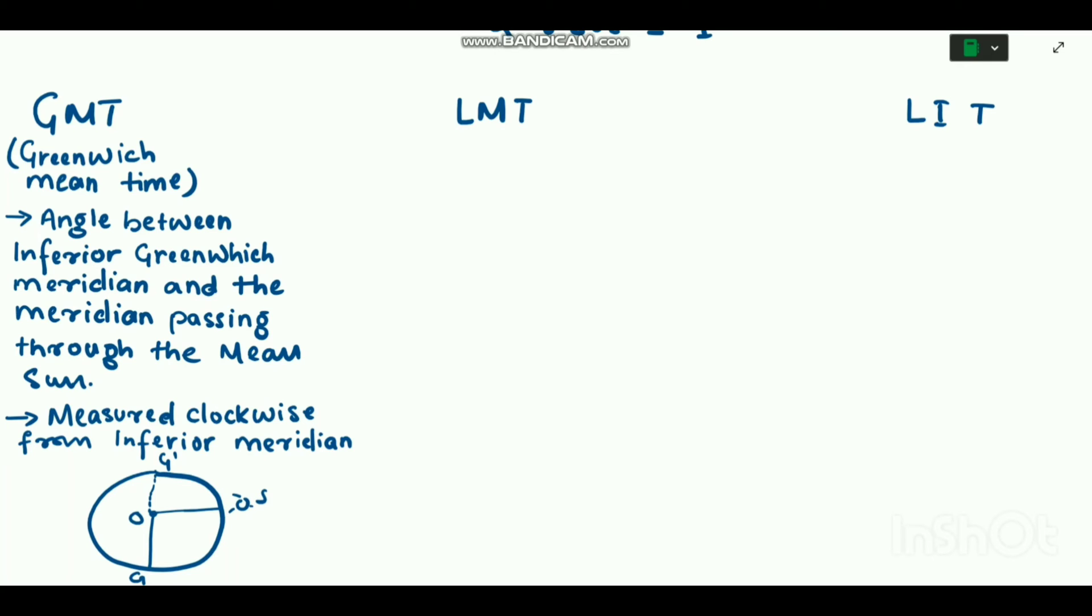So as you can see in this picture, angle G dash O S is the GMT, and it is measured clockwise from inferior meridian of Greenwich, that is Z dash O.